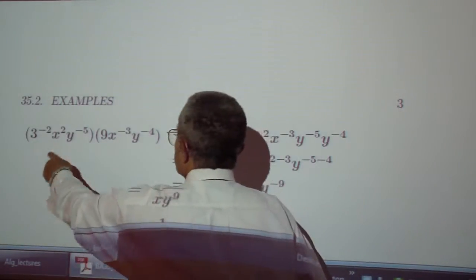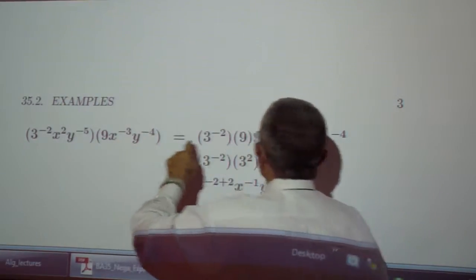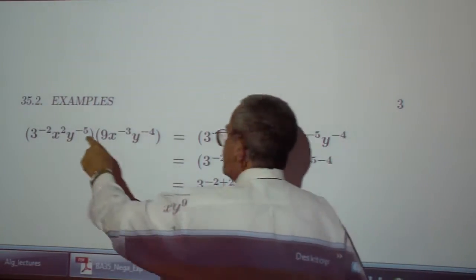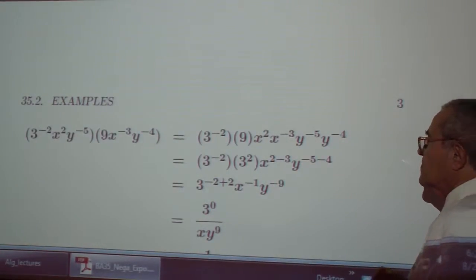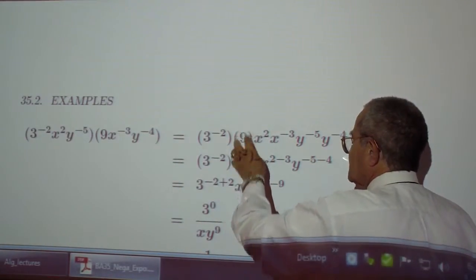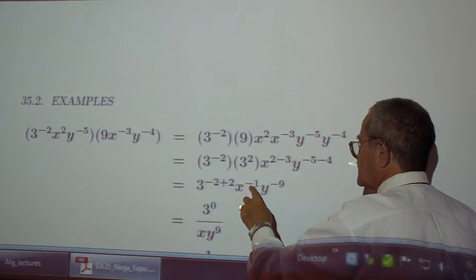So where you have 3 to the negative 2 times 9, you have x to the 2 times x to the negative 3, you have y to the negative 5 times y to the negative 4. This is 3 to the negative 2 times 3 to the positive 2, add the exponents you get negative 1.